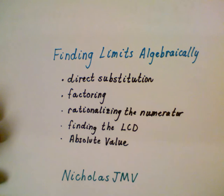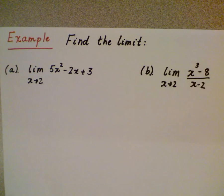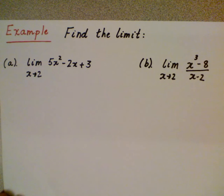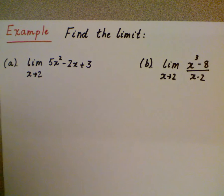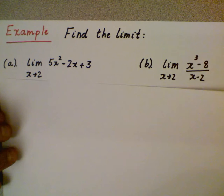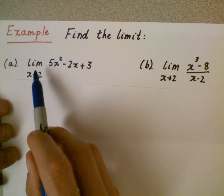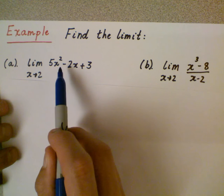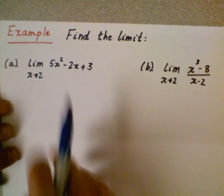So let's go ahead and look at two examples. Find the limit of each of the following. The first one is a polynomial. Let's look at part A. The limit as x is approaching 2 of 5x² - 2x + 3. Now this is a polynomial.